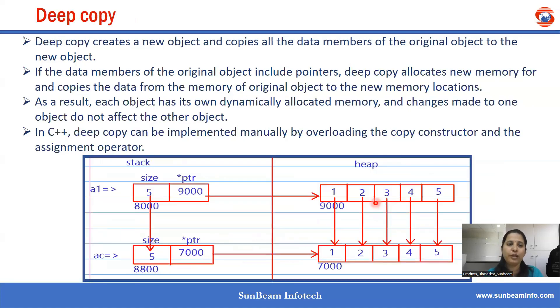Deep copy creates a new object and copies all the data members of the original object into the new object. If the data members of the original object include pointers,